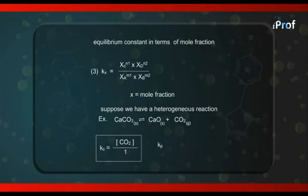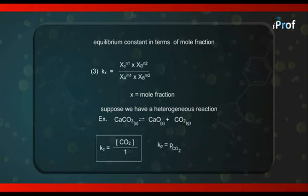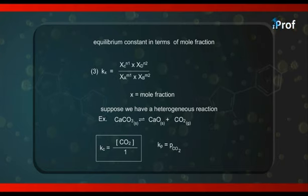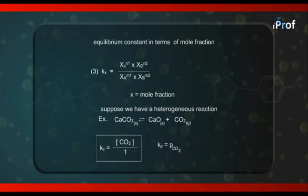Similarly, Kp for this reaction equals the partial pressure of CO2 raised to the power one, since the stoichiometric coefficient of CO2 is one. No terms related to CaCO3 and CaO appear because they are solids and their active masses are taken to be equal to unity.